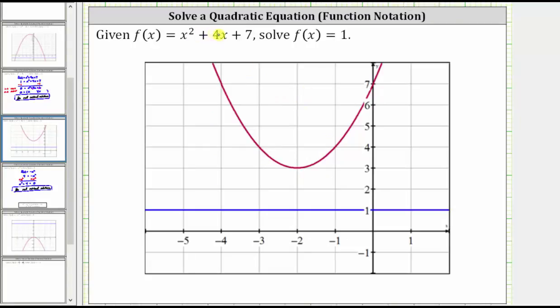F of x equals x squared plus four x plus seven is graphed in red, and f of x equals one is graphed here in blue. Notice how there are no points of intersection, which means the only solutions for f of x equals one would be when we have complex solutions, which again, we will learn about very soon.